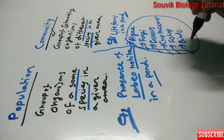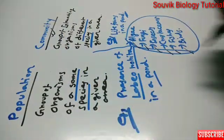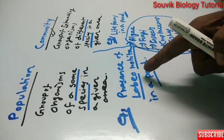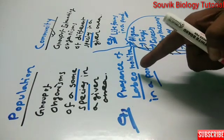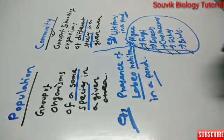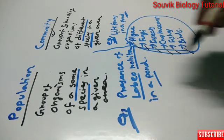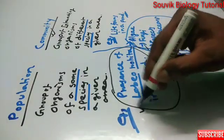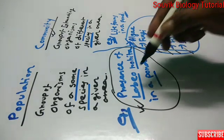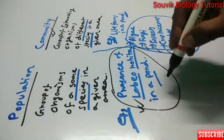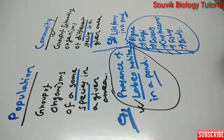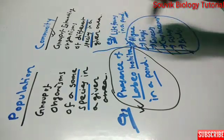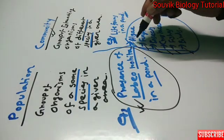To summarize: population is a group of organisms of the same species — such as the presence of Labio rohita in a pond, where only one species is counted. How many of that one species are present in a particular area is the example of population.